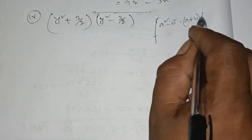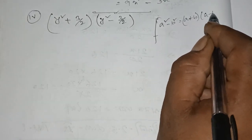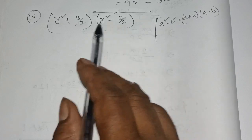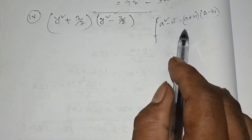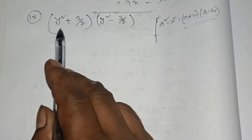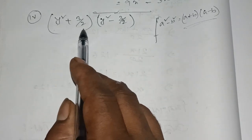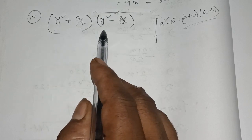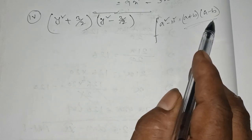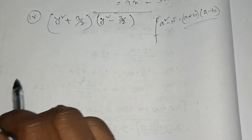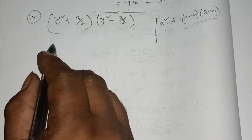Now let's look at a into a minus b. This is the identity a plus b into a minus b. If we have a and b, a plus b into a minus b gives a squared minus b squared.